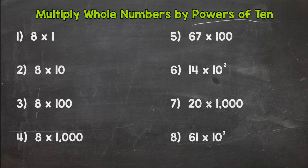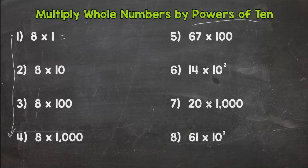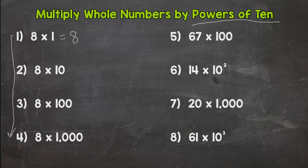Number one is 8 times 1. Now 1 is not a power of 10, but along the left side, problems 1 through 4 are 8 times 1, 8 times 10, 8 times 100, and 8 times 1000. We want to notice a pattern as we go down. The powers of 10 are 10, 100, 1000, 10,000, 100,000, a million, and so on.